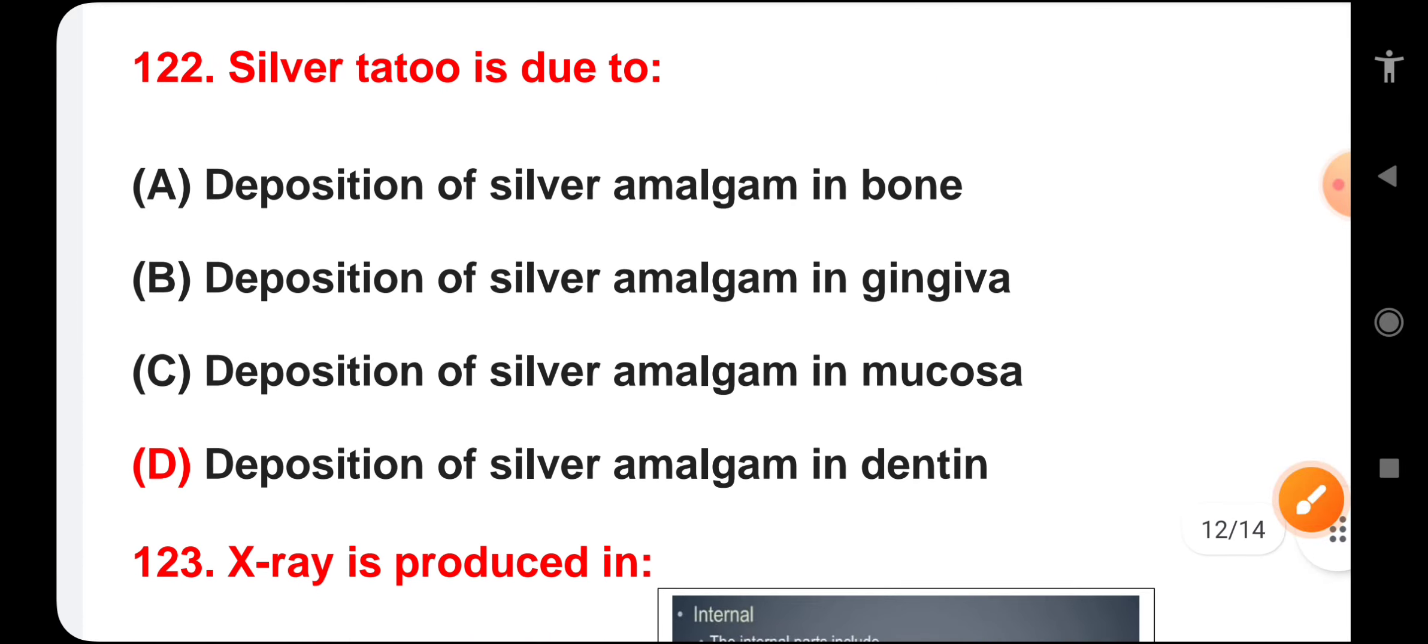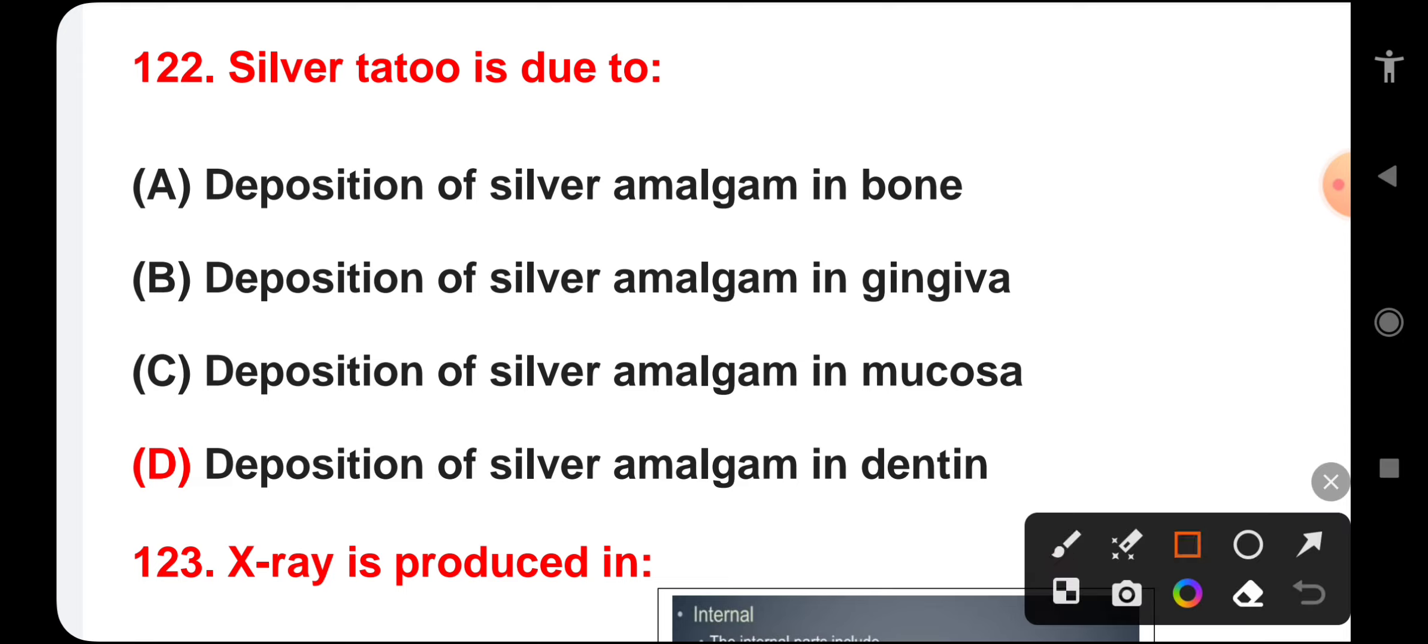Silver tattoo is due to deposition of silver amalgam in bone, gingiva, mucosa, or dentine. The correct answer is silver tattoo is due to deposition of silver amalgam in mucosa.